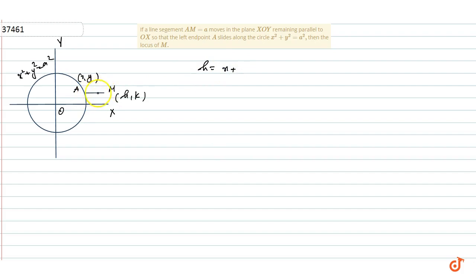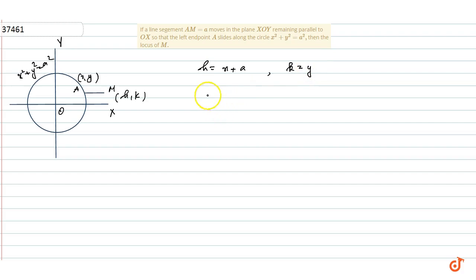So h = x + a and k = y, which means x = h − a and y = k.